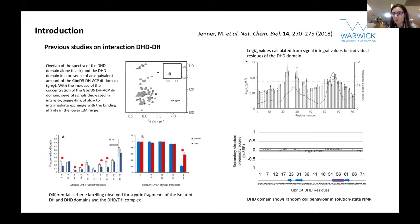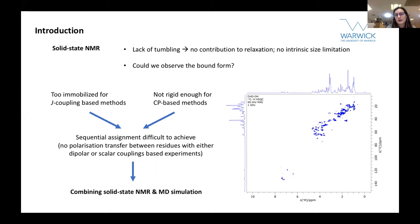We thought we could approach this problem using solid-state NMR because, with the lack of tumbling, there's no contribution of tumbling to relaxation. We thought we could observe the bound form. However, we had a problem in solid-state NMR: it was impossible to transmit polarization between residues, so sequential assignment was impossible. But we were able to get residue-specific assignment based on the J-coupling method. We thought we could use that in combination with MD simulation.